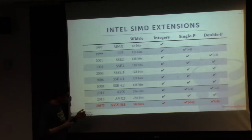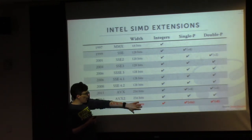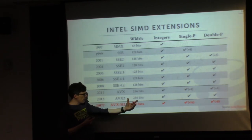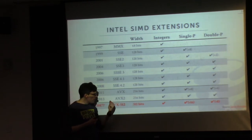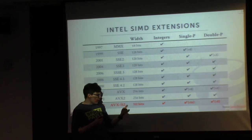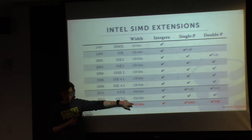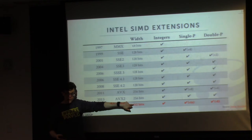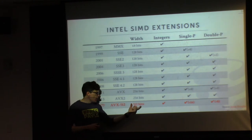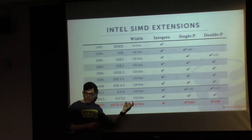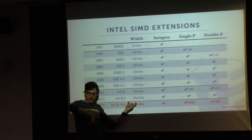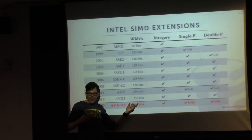You can see they've been doubling the register width going down the table. It's unlikely they'll go to 1024-bit SIMD registers, because 512 bits is the current cache line size—going beyond that would require changing other system aspects. I suspect Intel will ship the AVX-512 instruction set on Xeons soon, but whether they go to 1024 bits is unclear.